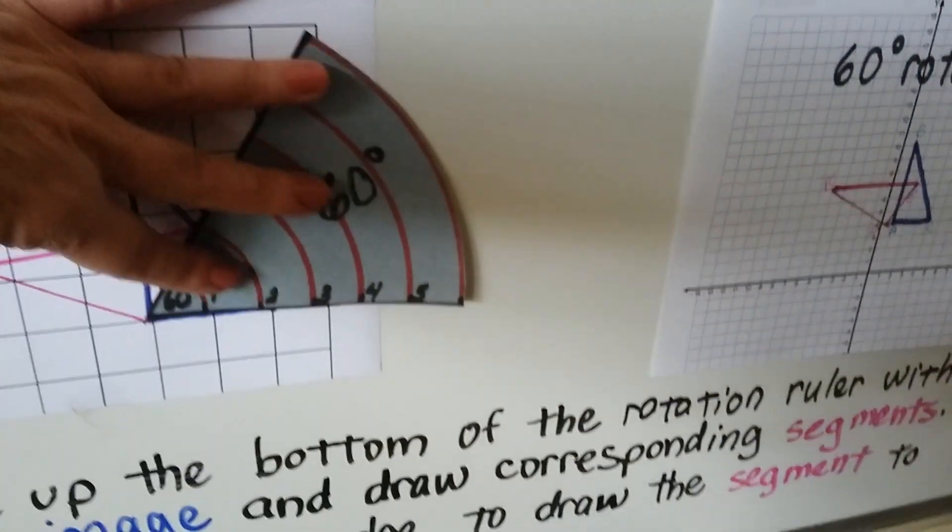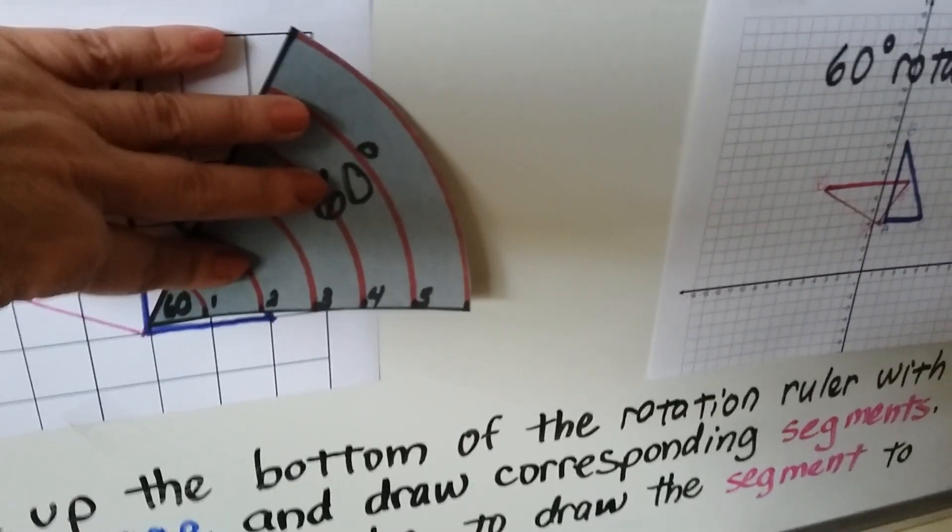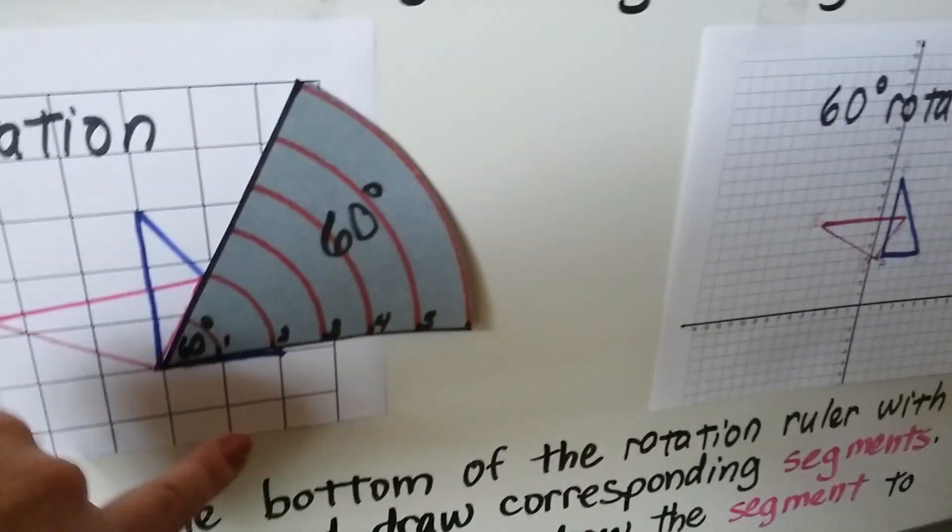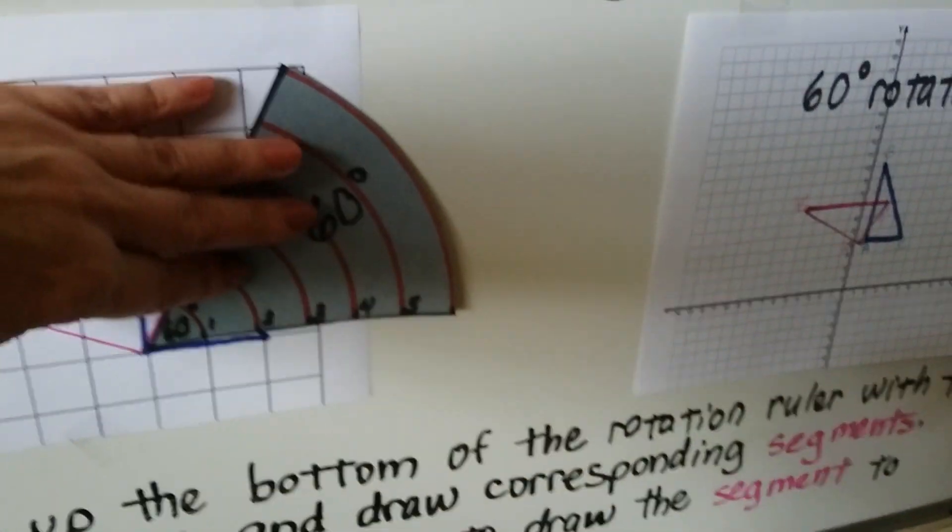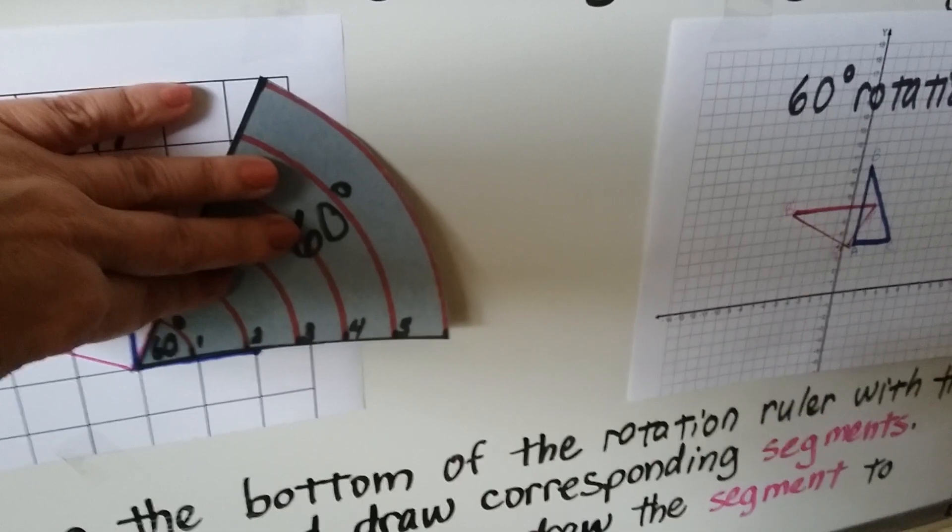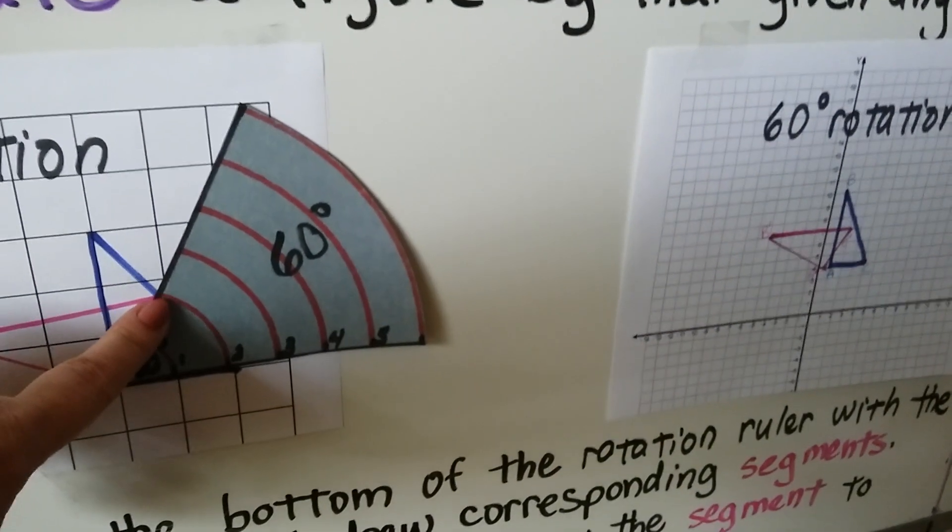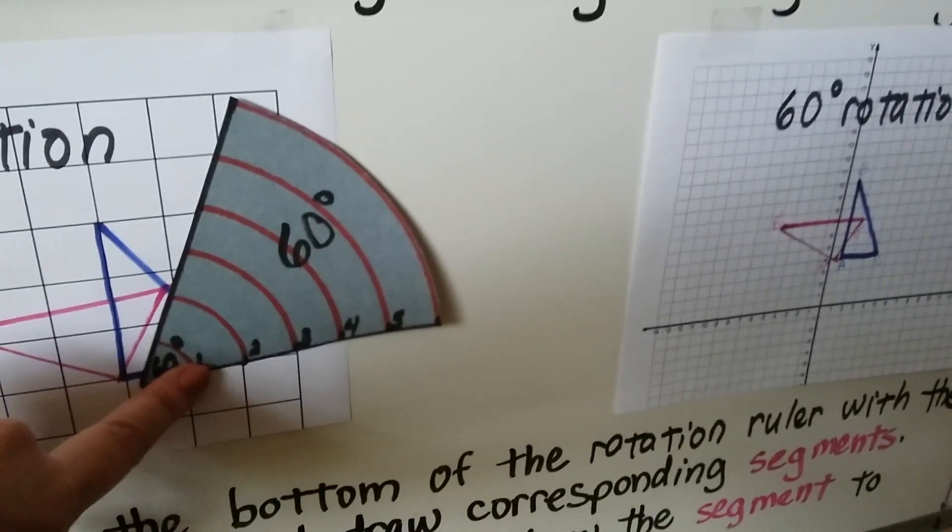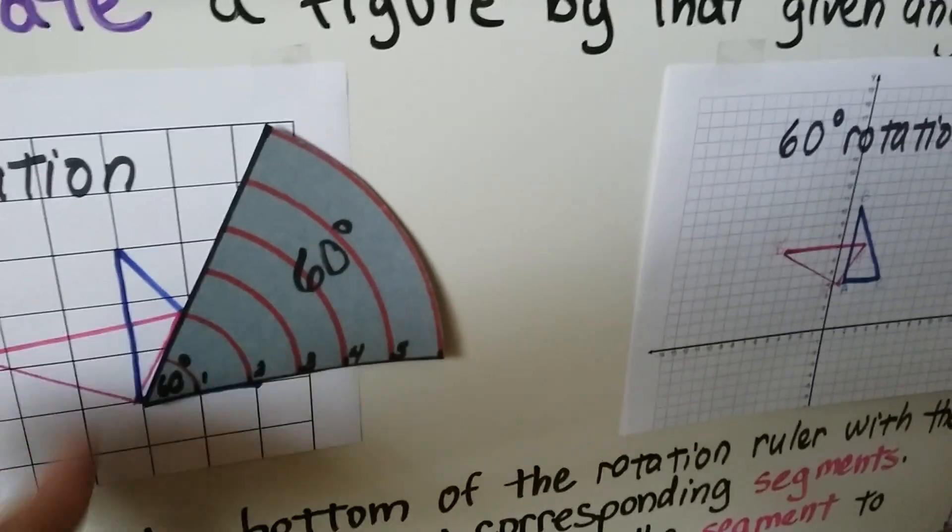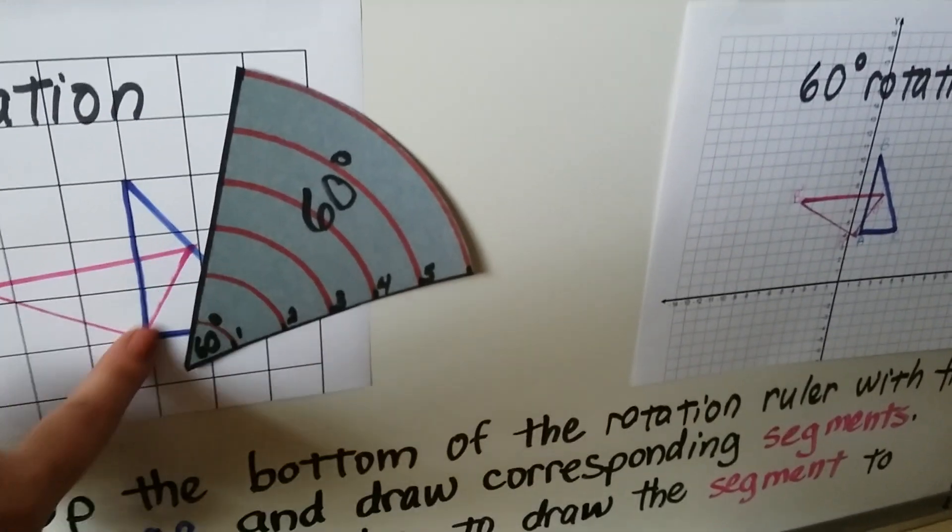So I line it up along that line and we can see that it's at two units, right here. On the other side right here, we draw the line to the two units. So now I've got this pink line here.